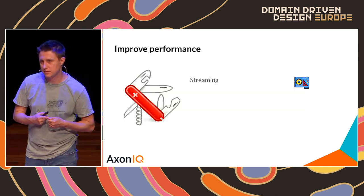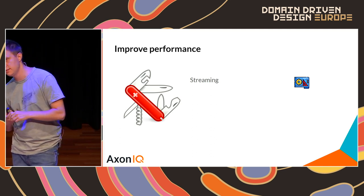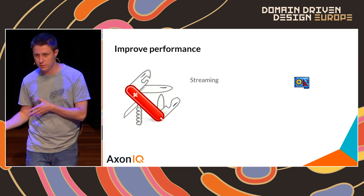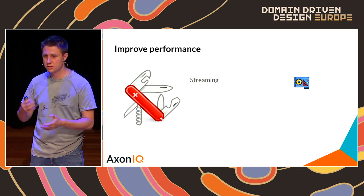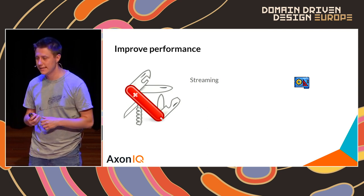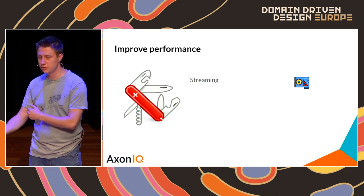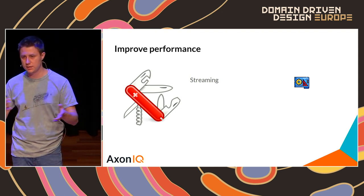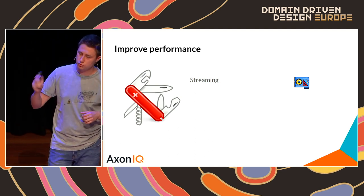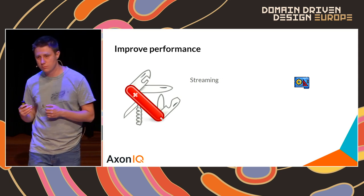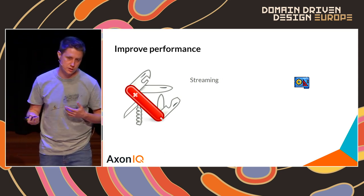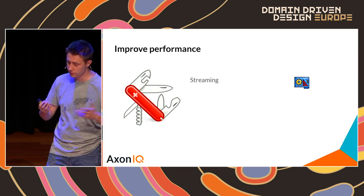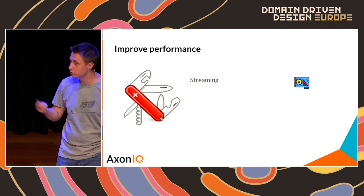Streaming is a design solution: if you design your API as request-reply, evolving to streaming is very difficult because other components depend on that API. You must start with a good API that supports streaming. Even if the underlying protocol doesn't support streaming, you're at a much better starting point than with a pure request-reply API.